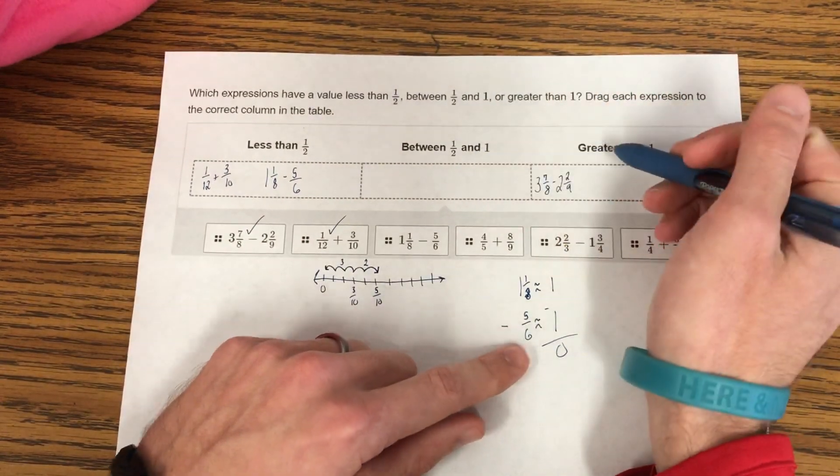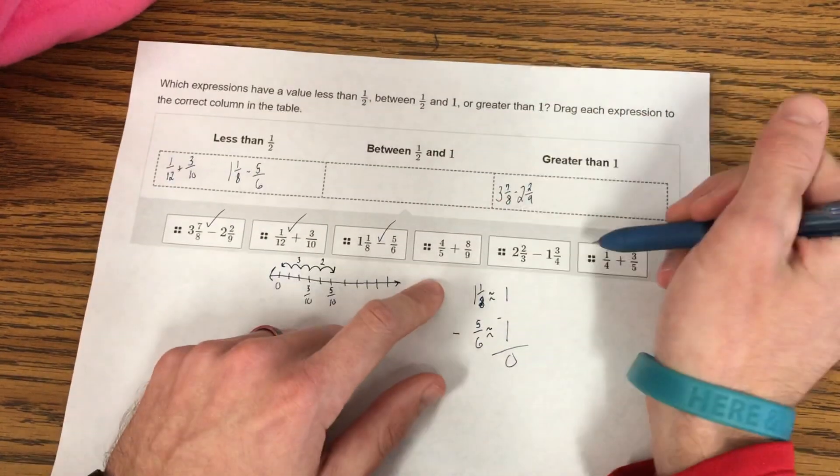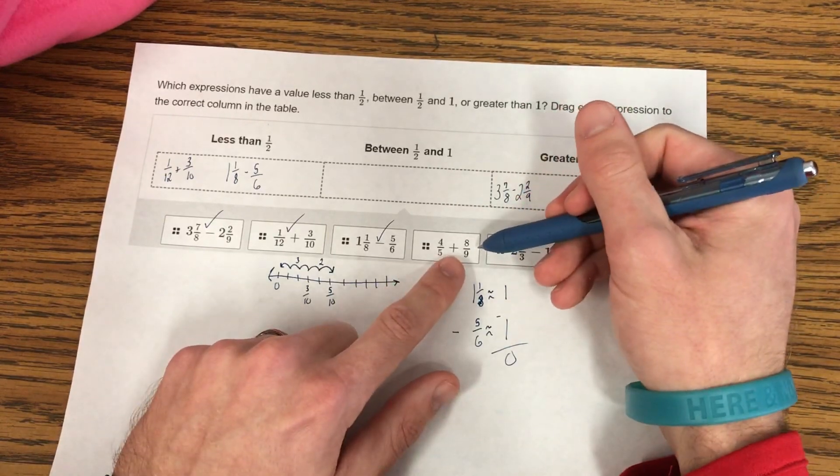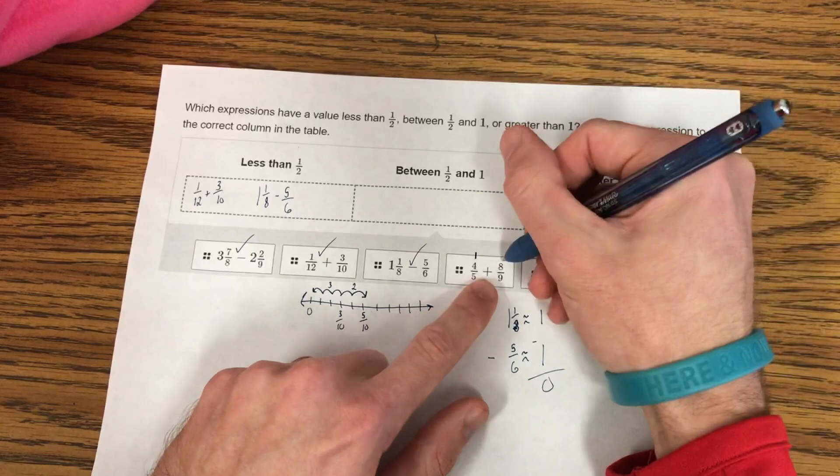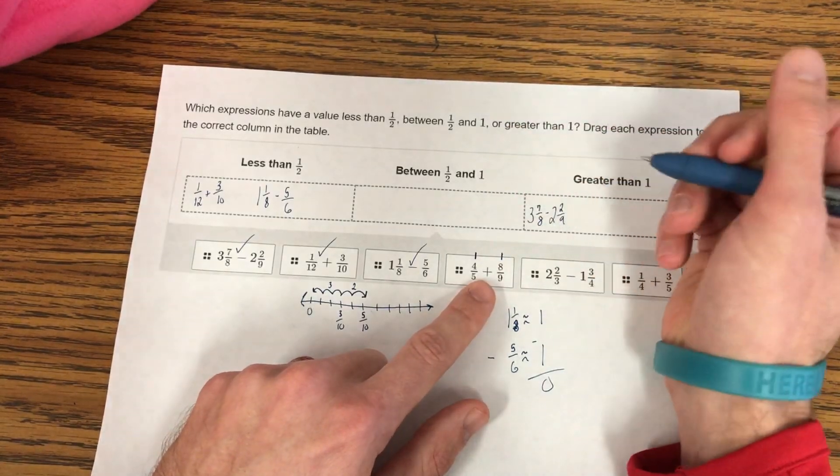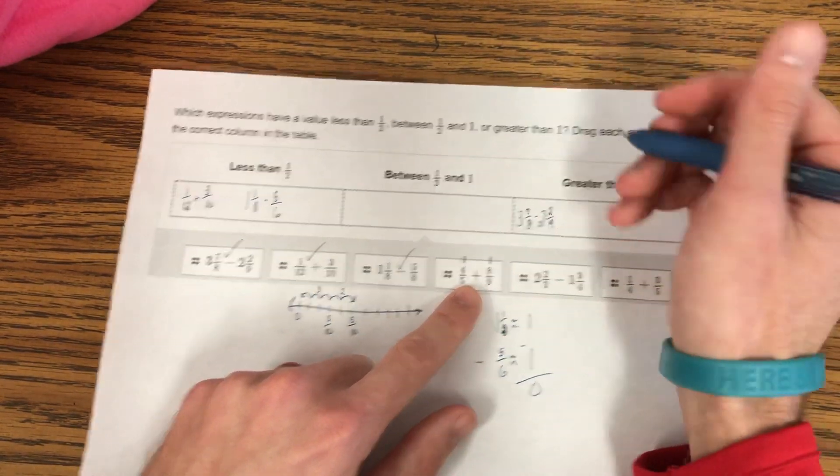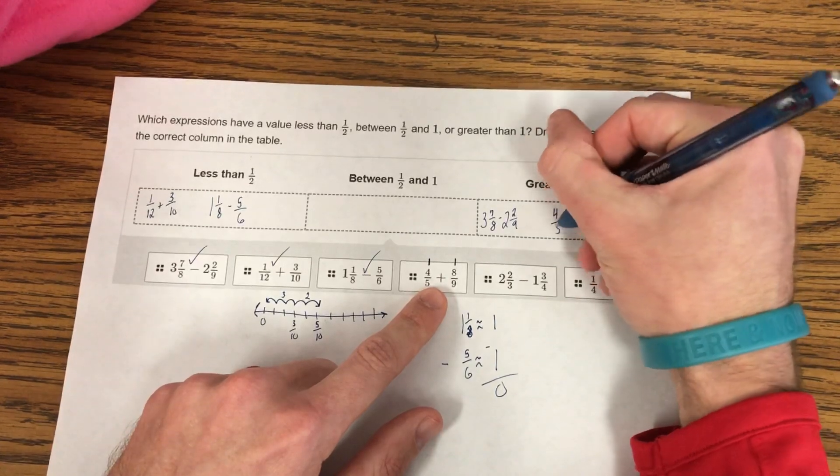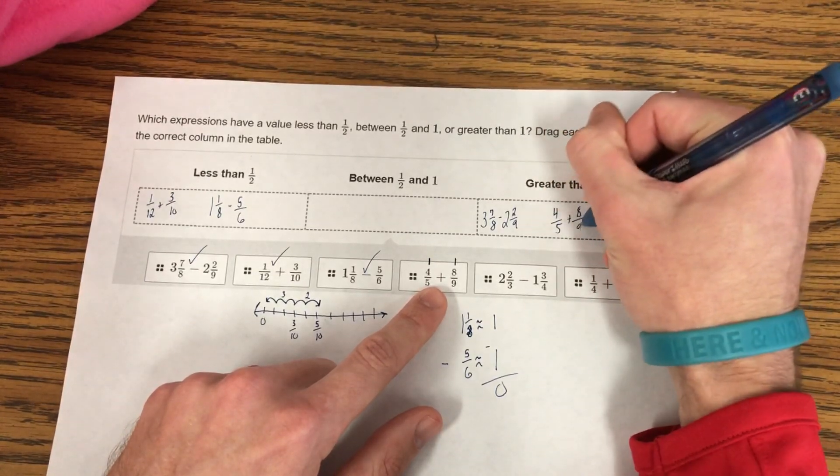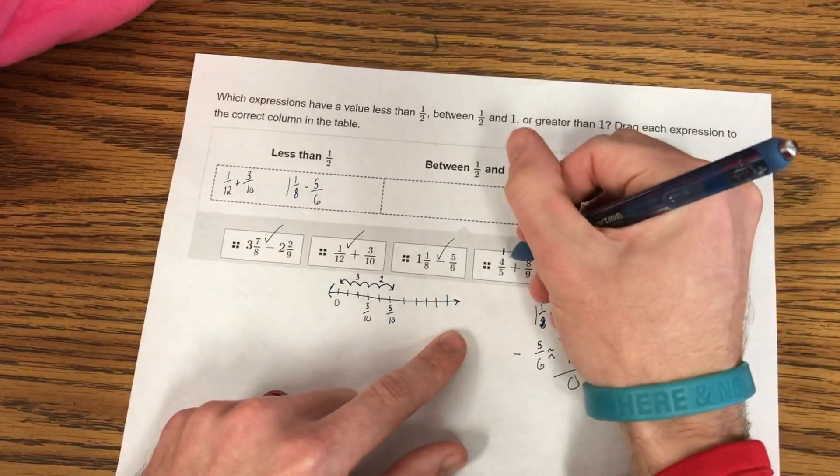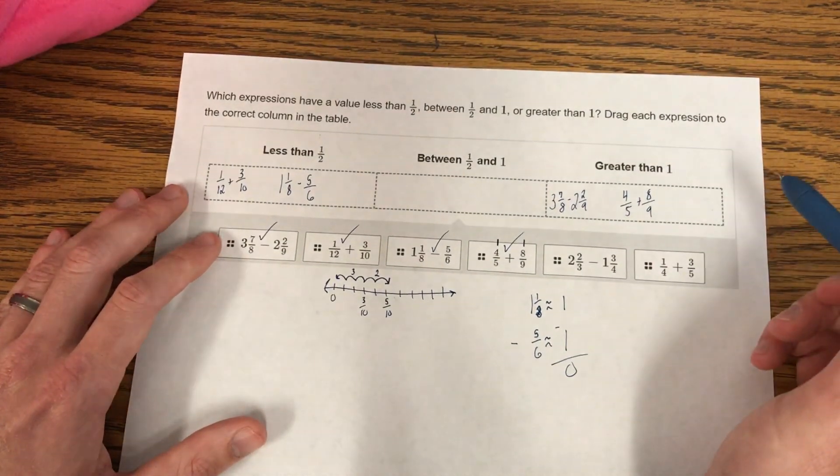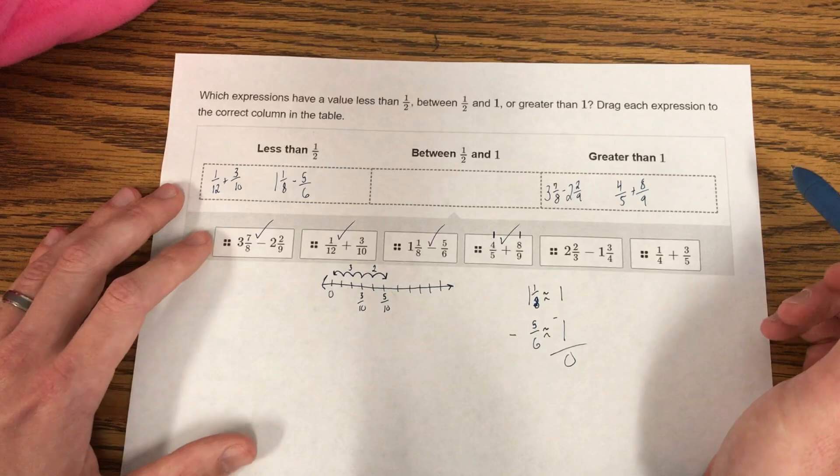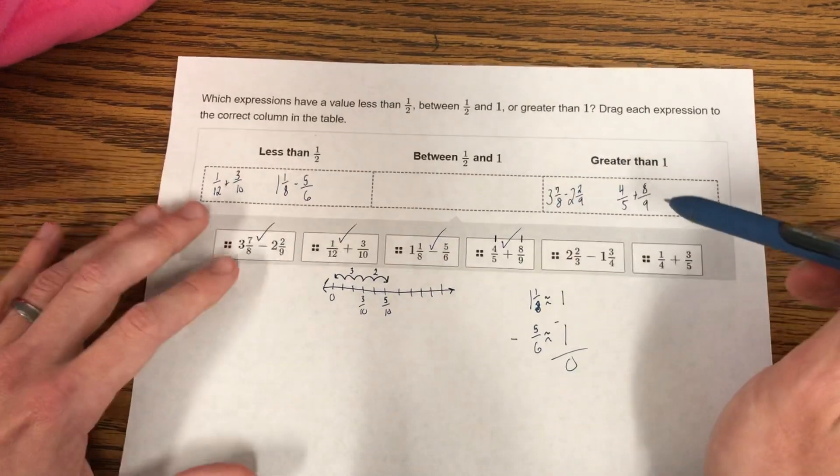So I've got 3 left here: 4/5 and 8/9. Well, 4/5 is really close to 1 whole. 8/9 is really close to 1 whole. Well, 1 plus 1 is 2. So this one has to be greater than 1. So far, I haven't had to solve any of these. I haven't had to find common denominators. I've just used my reasoning and my estimation skills because they were so close to their values.